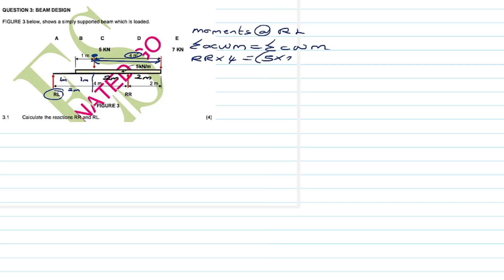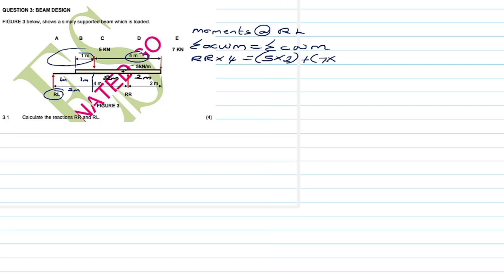This one is just a point force acting downwards — no UDL. Now we move to the 7 kN force, which is also acting in the clockwise direction. The 7 kN is four meters plus two meters from RL, so we write: 7 times 6. Is there any other force in the clockwise direction? Yes — there's a UDL of 5 kN/m.